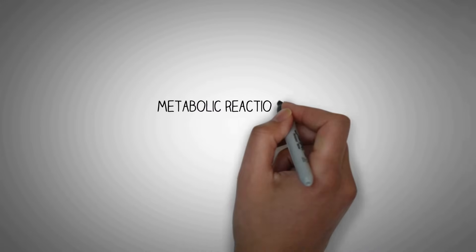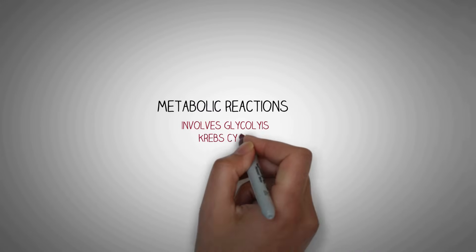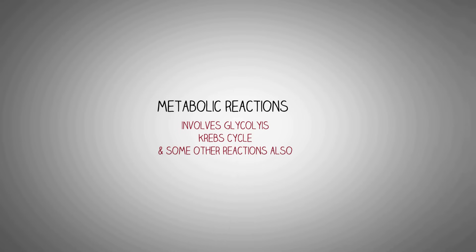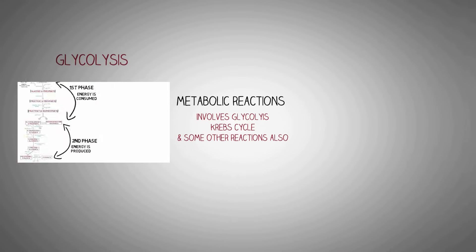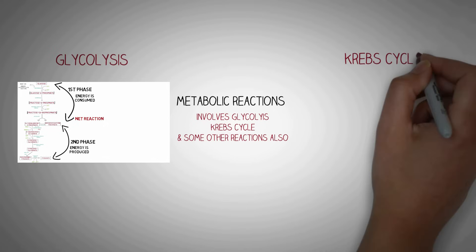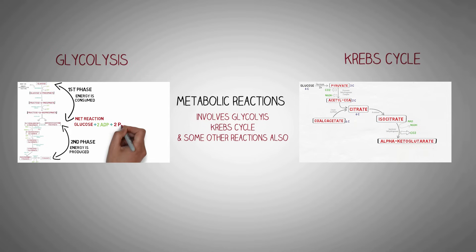The metabolic reactions involved in gluconeogenesis involve glycolysis, the Krebs cycle, and some other reactions. So it is very important to understand glycolysis and the Krebs cycle in detail. Before progressing further, make sure to watch the videos on glycolysis and Krebs cycle on our channel.